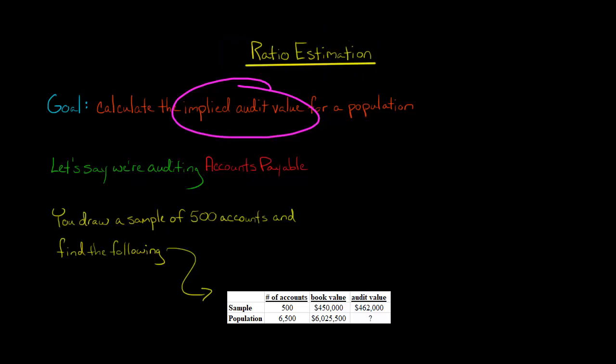So let's say that we're auditing accounts payable. You've got the following data here. You've got 6,500 accounts in the accounts payable, and then the book value of that, according to the company, is 6,025,500 for the entire 6,500 accounts payable.